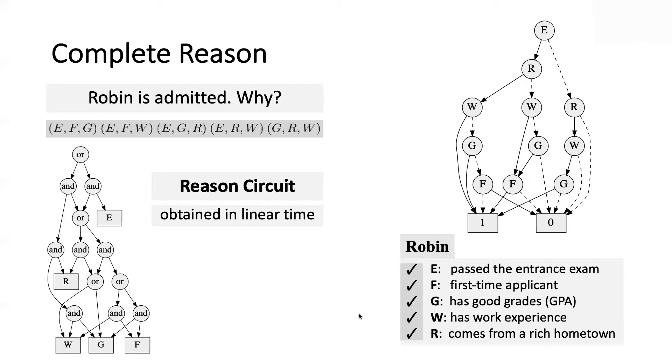And that form includes OBDDs and a particular class of tractable circuits known as decision DNNF. Moreover, this reason circuit happens to be monotone, which means it is tractable, allowing us to do various things efficiently on it.